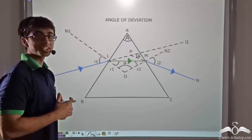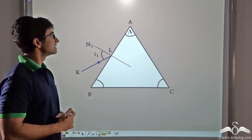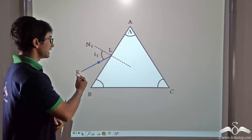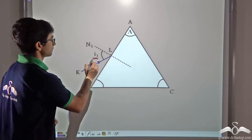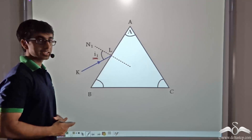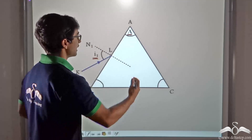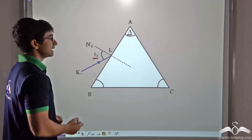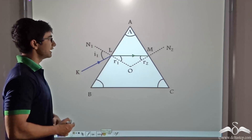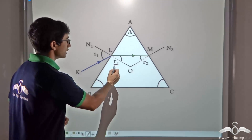Now let us analyze this ray diagram in greater detail. A light ray KL is incident on surface AB at point L. The angle of incidence that KL makes with the normal N1 is I1. Angle A is the angle of the prism, that is the angle between refracting surfaces AB and AC. Once this ray is incident on the refracting surface, it undergoes refraction and bends towards the normal N1, making an angle R1 with the normal.